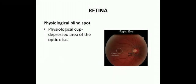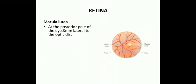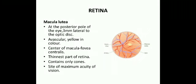The physiological blind spot is a depressed area of the optic disc — called the physiological cup — where there are no rods and cones, making it insensitive to light. The macula lutea is another circular area at the posterior pole of the eye, 3 millimeters lateral to the optic disc; it is avascular and yellow. The center of the macula is called the fovea centralis, the thinnest part of the retina, containing only cones with no rods, and it is the site of maximum visual acuity.